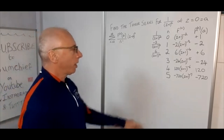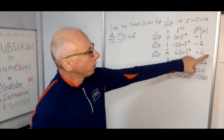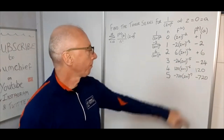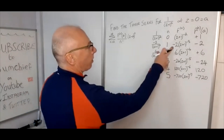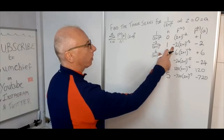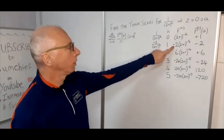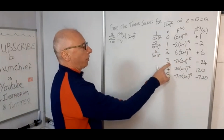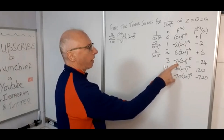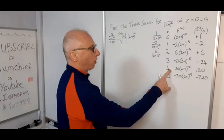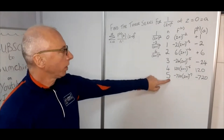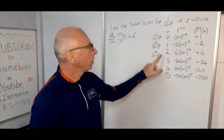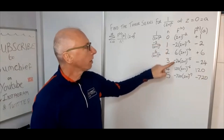There is a clear pattern forming in the values of these coefficients — they are all linked to the factorial function. Ignoring the sign, we have: 2 factorial = 2, then 3! = 6, 4! = 24, 5! = 120, 6! = 720. So the absolute value of the nth derivative at 0 is (n+1) factorial, and the sign alternates.